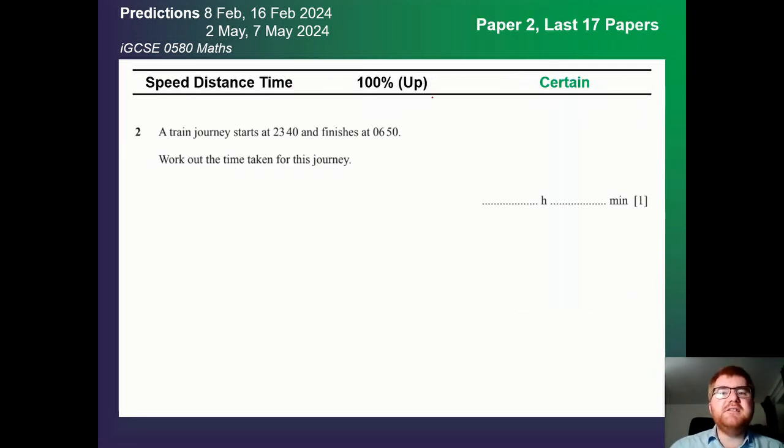And on to speed distance time. Now into the certain category. It's gone up from last year to exactly 100%. And these can vary. They can be a question of just speed distance time and you have to work out the time taken. Or you have to actually interpret a graph as well.